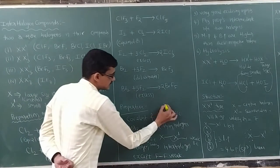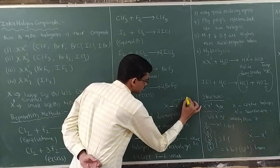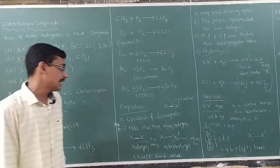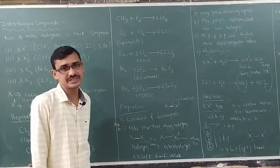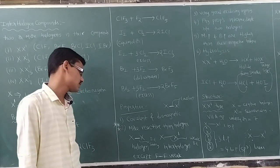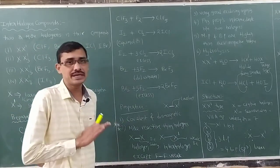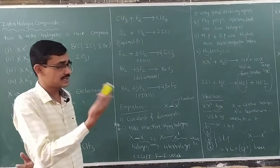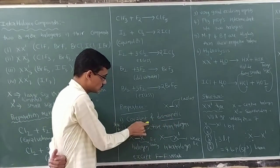The bond between X and X' in interhalogen compounds is covalent. Because both are halogens, the electronegativity difference is not much, so they exist as covalent molecules. All interhalogen compounds are covalent. Also, they do not have any unpaired electrons, making them diamagnetic in nature.